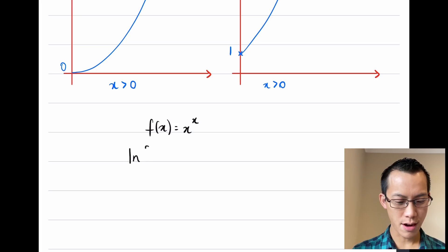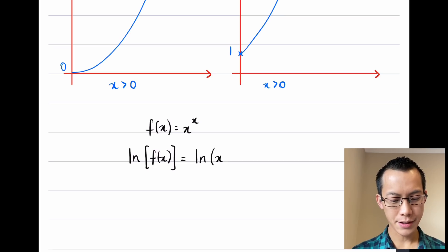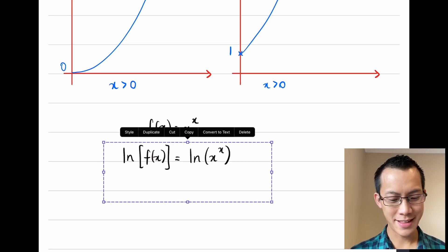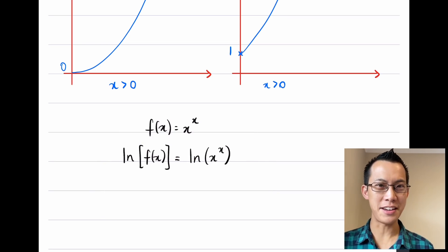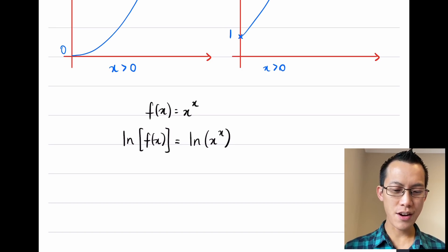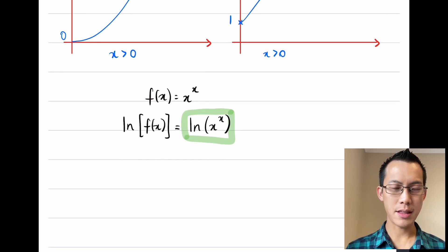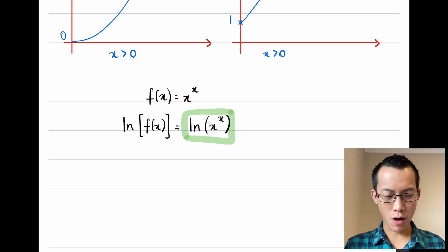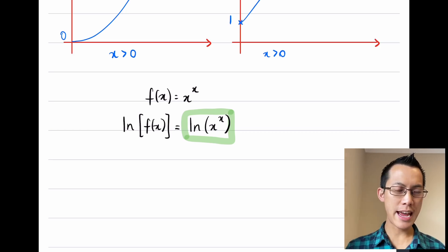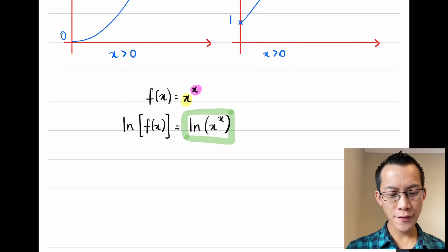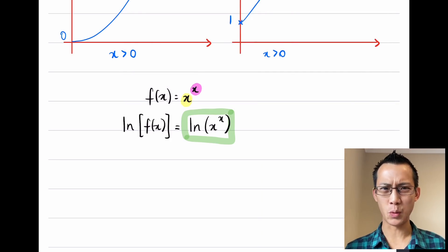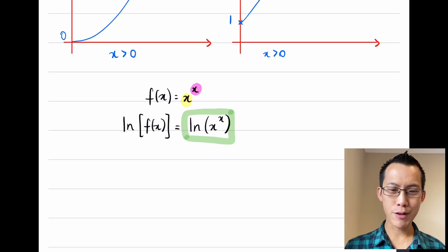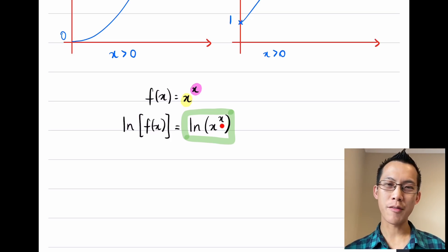I'm going to get natural log of f over here, and that leaves me with the natural log of x to the power of x. Now I know this looks like it's unnecessarily complicating things, but if you have a look on the right hand side, there's some log laws that can help you. This problem is difficult because you've got an x in the base and an x in the power, and that's what makes this weird and complicated. But I can actually eliminate that problem using log laws.